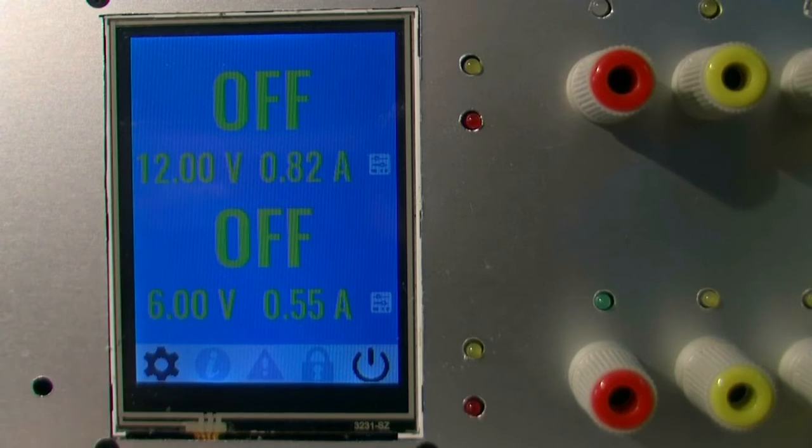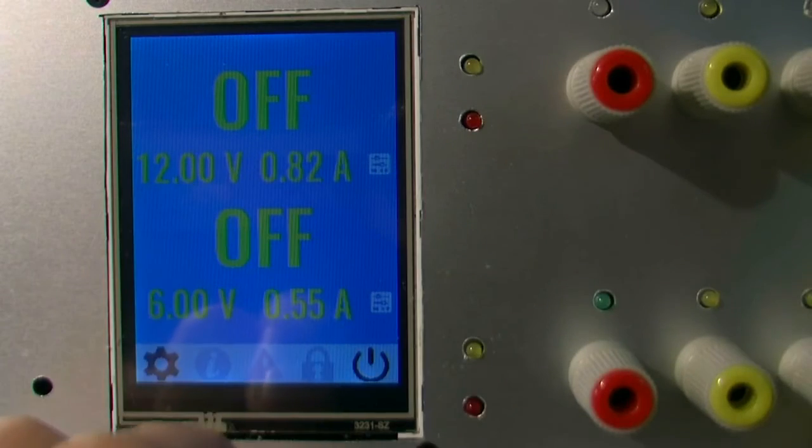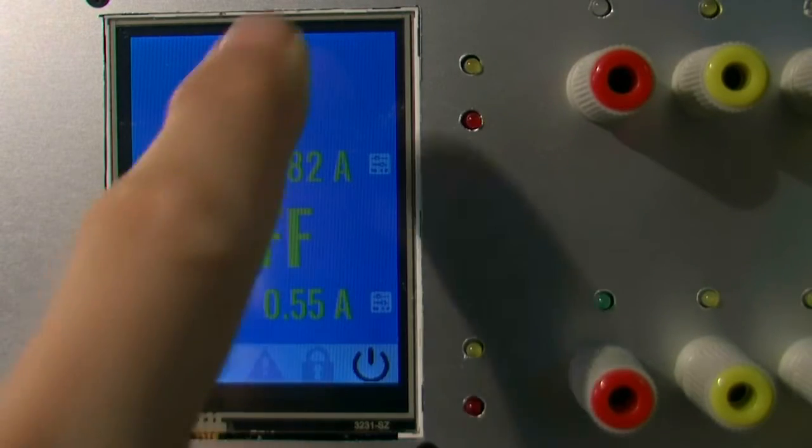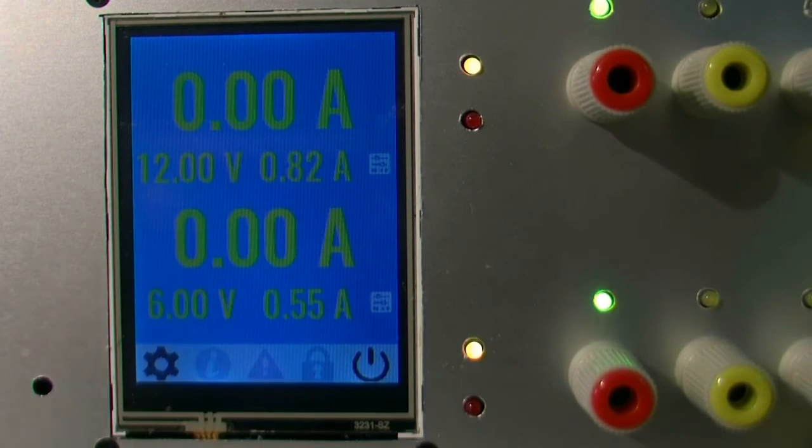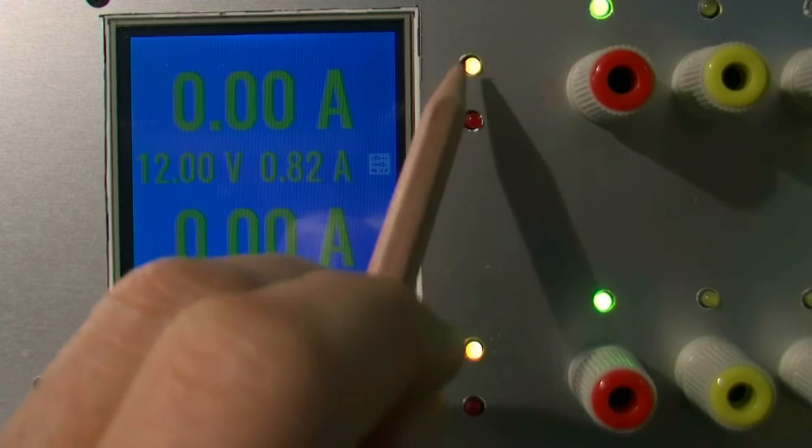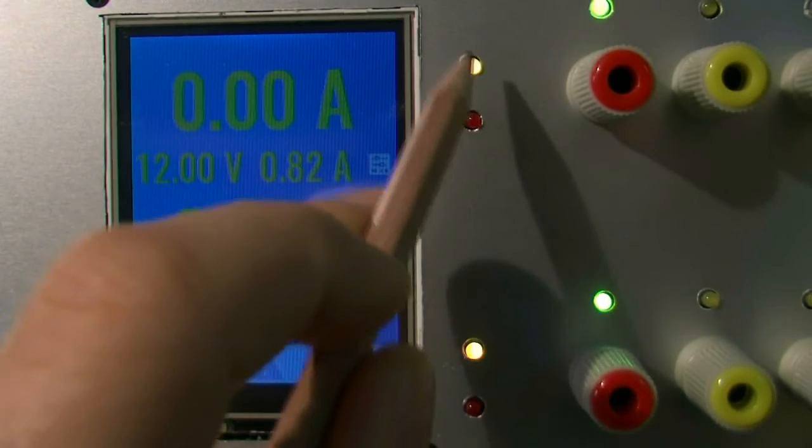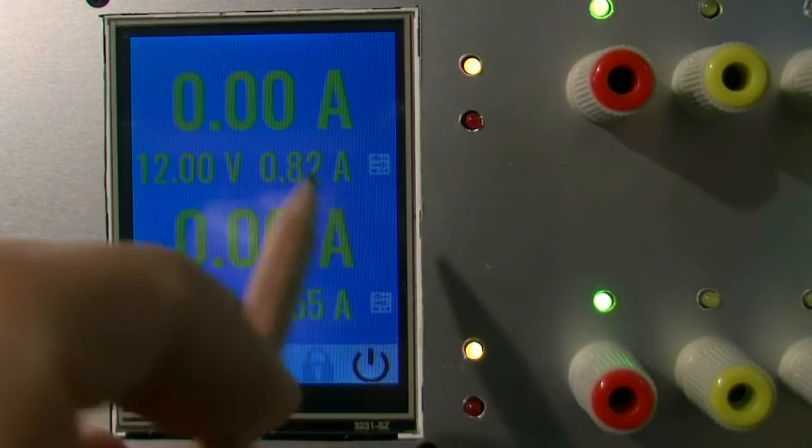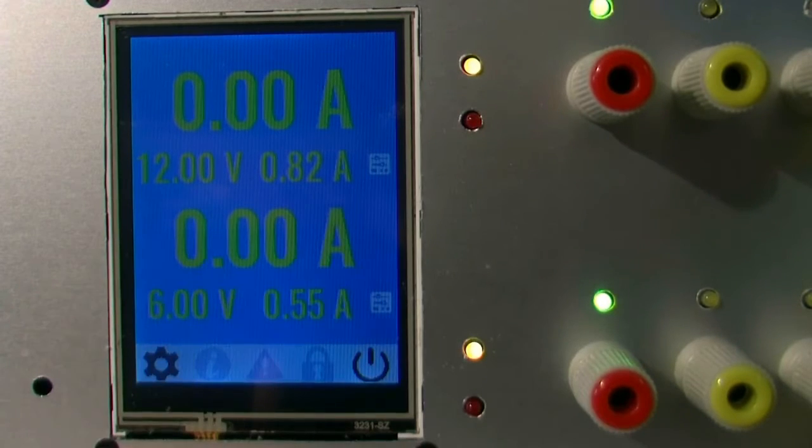This is a programmed voltage output voltage and this is a programmed maximum current. So to start working or to make output on, you simply need to do this and you can see that constant voltage LED is turned on.